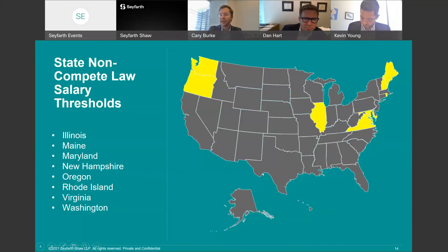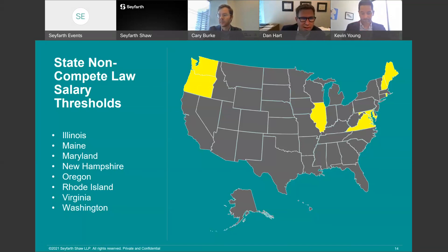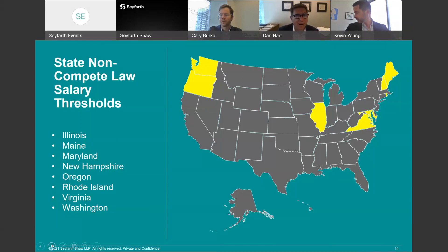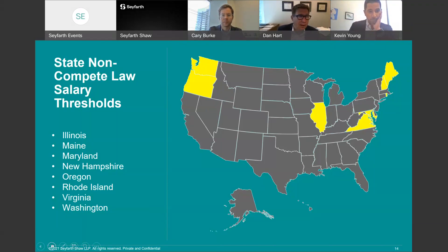Let's move on to the other category of state statutes that overlap with wage and hour law — those imposing compensation thresholds. We've already touched on Oregon (currently about $99,000 per year, tied to the median income of a four-person family under U.S. Census Bureau numbers), Rhode Island (annual earnings more than 250% of the federal poverty level, roughly $31,000 per year), and Virginia ($1,233 per week currently, equating to about $64,000 annually). Many other states have recently joined this trend, including Illinois, Maine, Maryland, New Hampshire, and Washington.